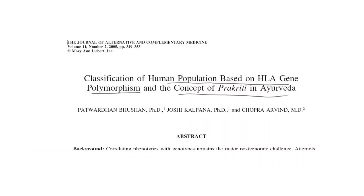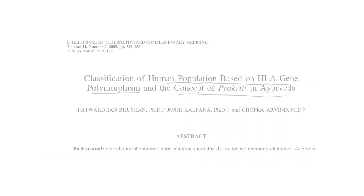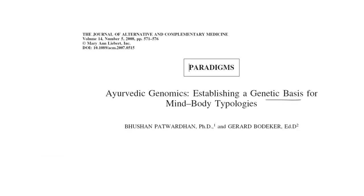This study is a very important and fundamental study establishing a genetic basis for mind-body typologies as explained in Ayurveda. There have also been suggestions that Ayurveda Prakriti type and certain genetic polymorphisms could be associated with metabolic variability, and one study classified human populations based on HLA gene polymorphism and correlated it with the concept of Prakriti in Ayurveda. This is being called Ayurvedic genomics or Ayurgenomics — a new branch developing in an Ayurvedic context where genomics and the knowledge of Prakriti are being integrated. With this, I would like to conclude this lecture. Thank you.